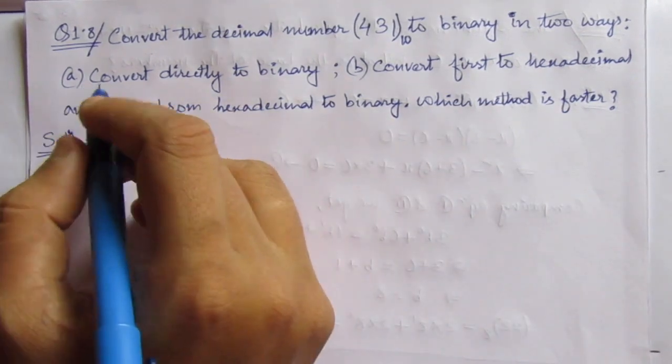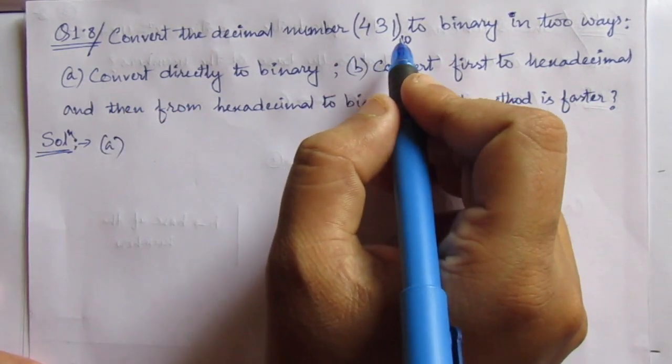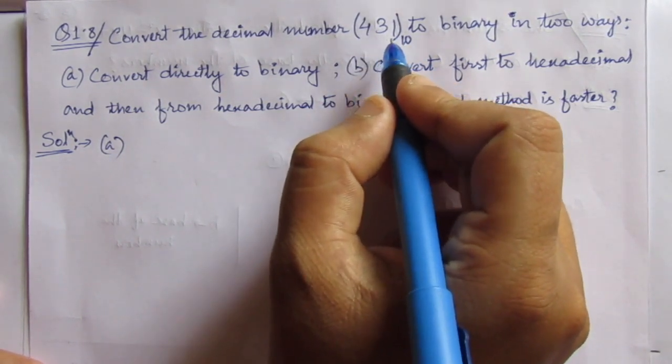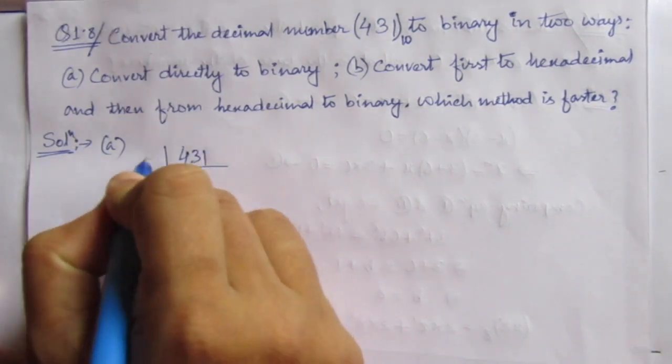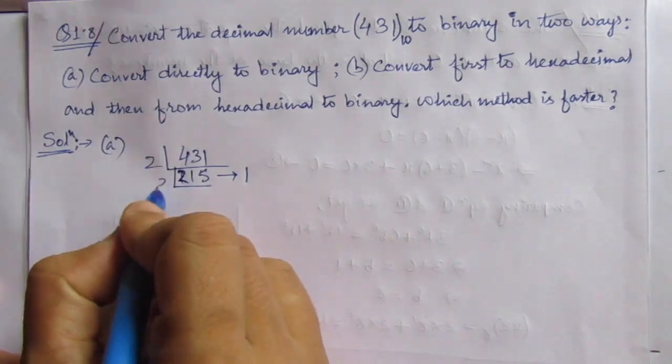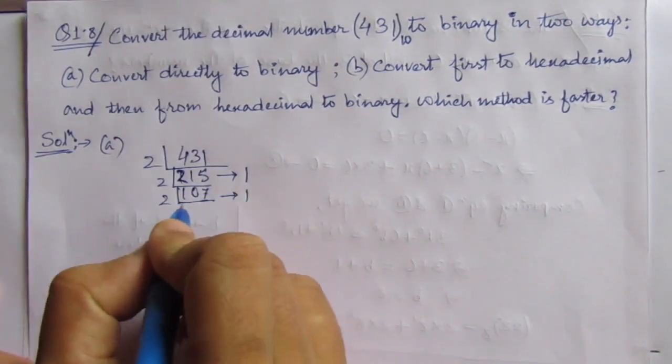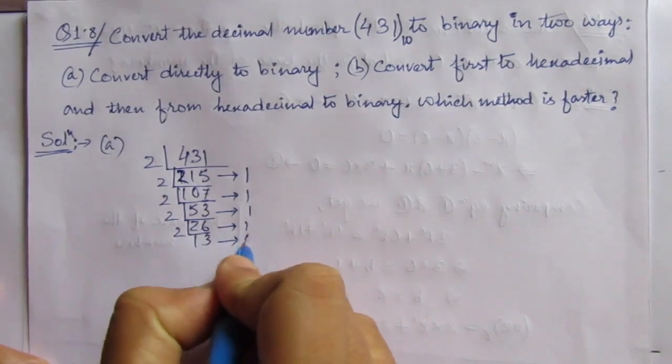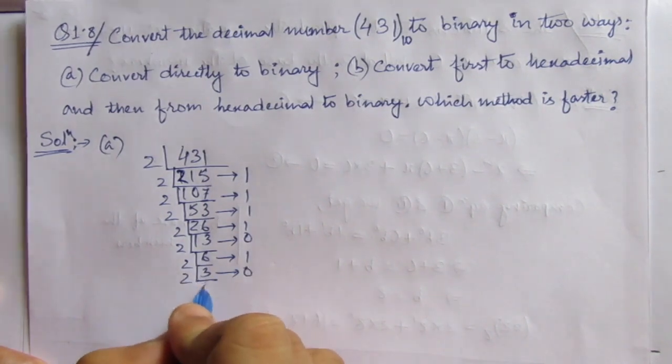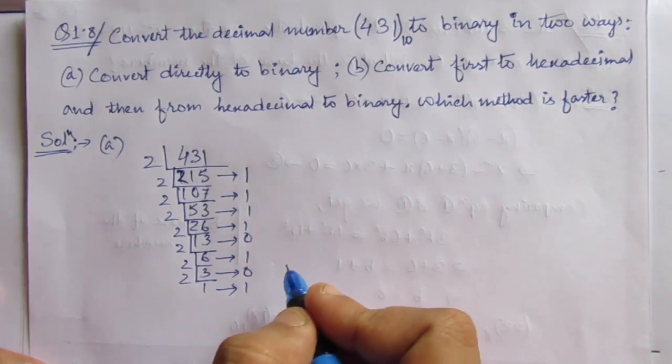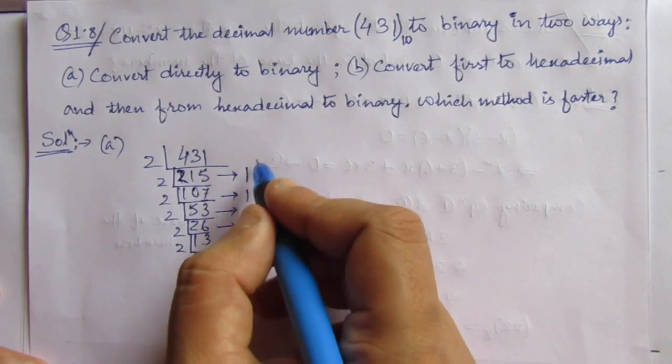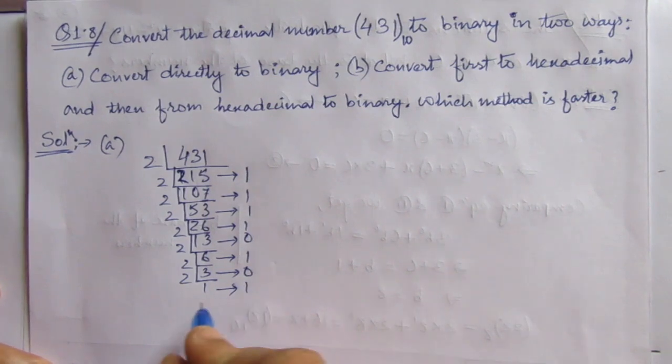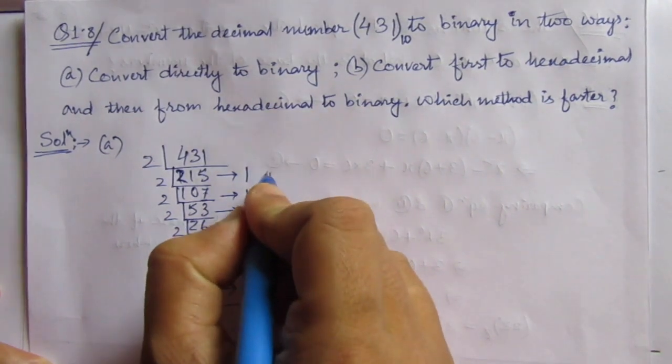First of all, let us do this first part. So for converting this decimal number into binary, we have to divide this number as many times by 2. 431 divided by 2 and the remainder is 1 here. So we have divided by 2 and these are the remainders at each step. To obtain the binary equivalent, we have to write from here to here.